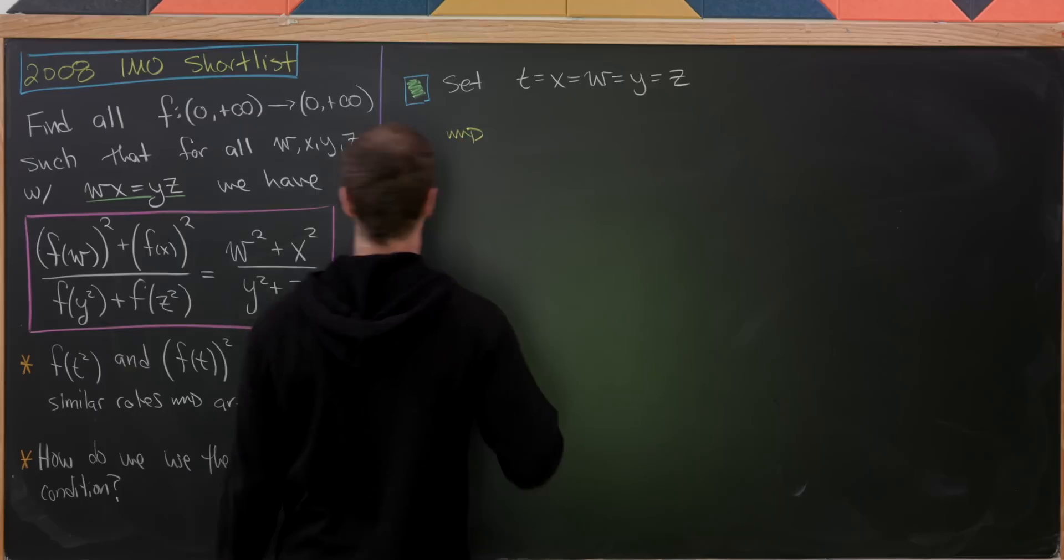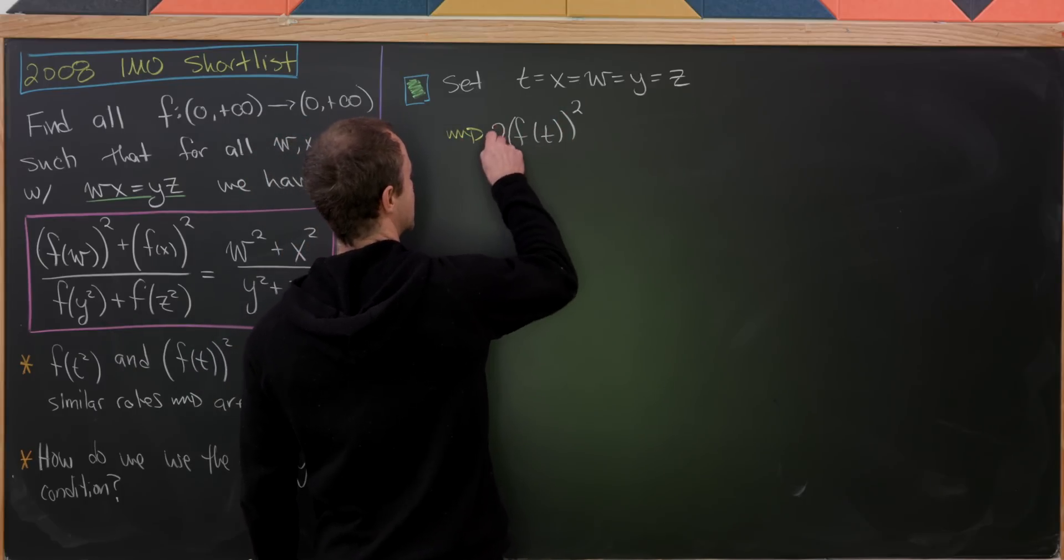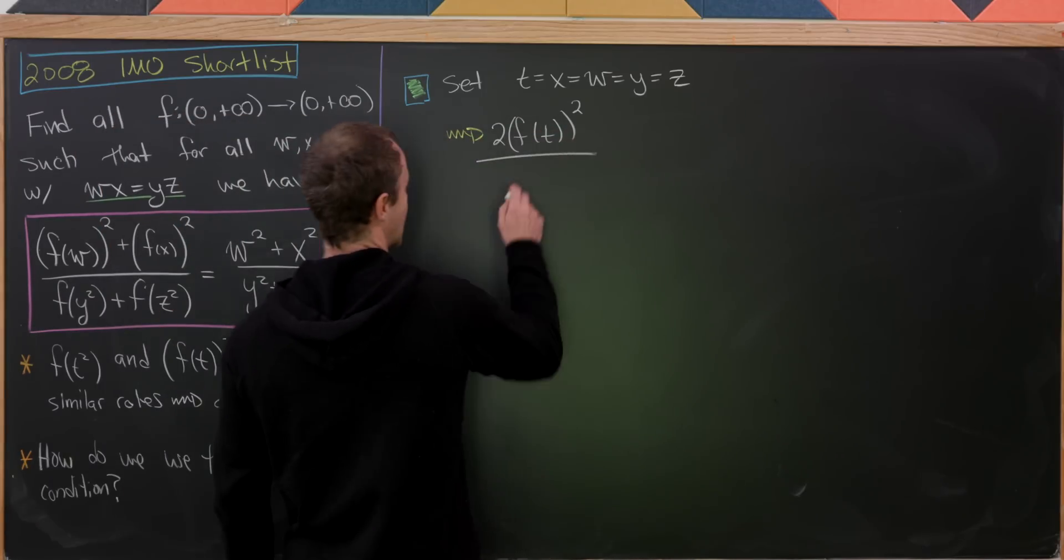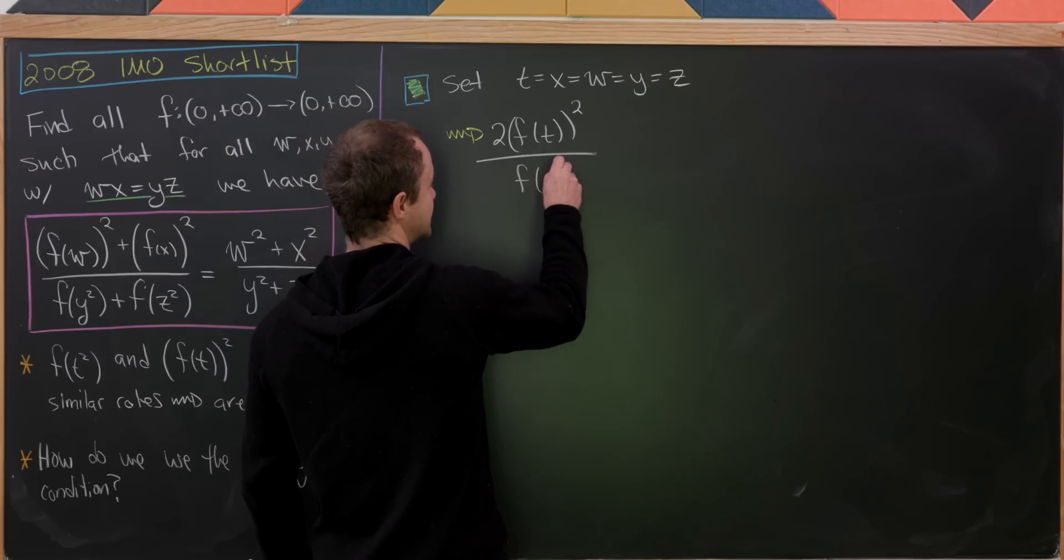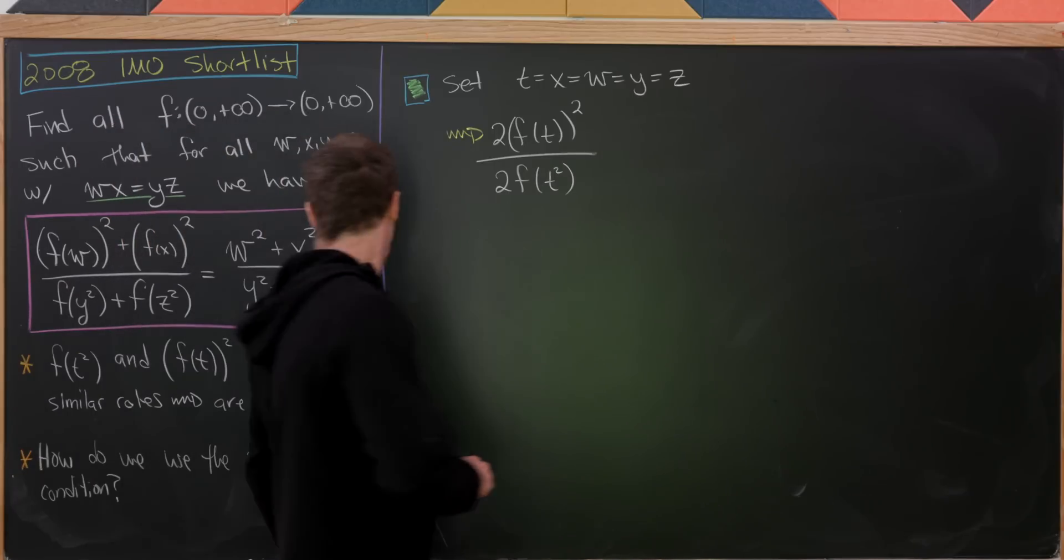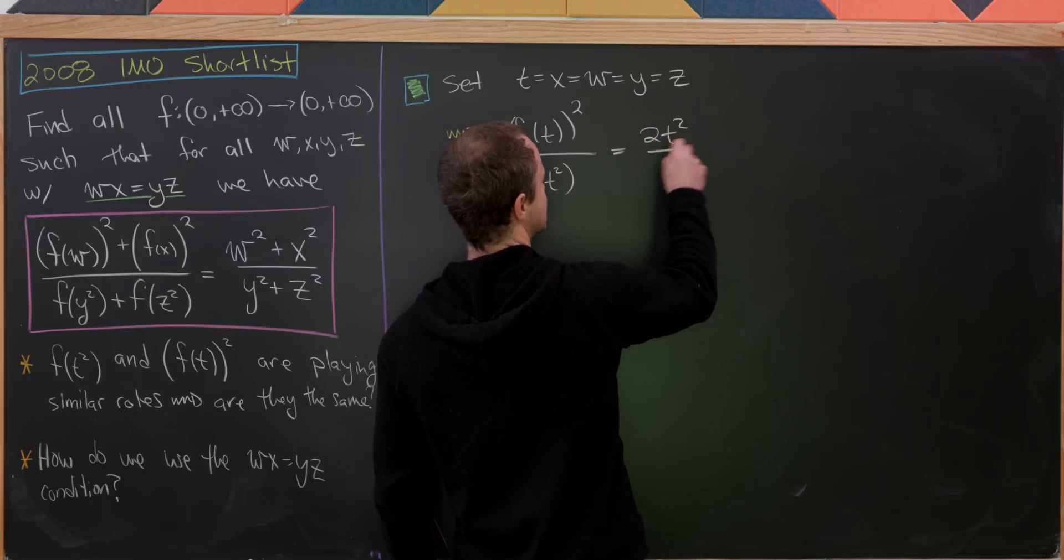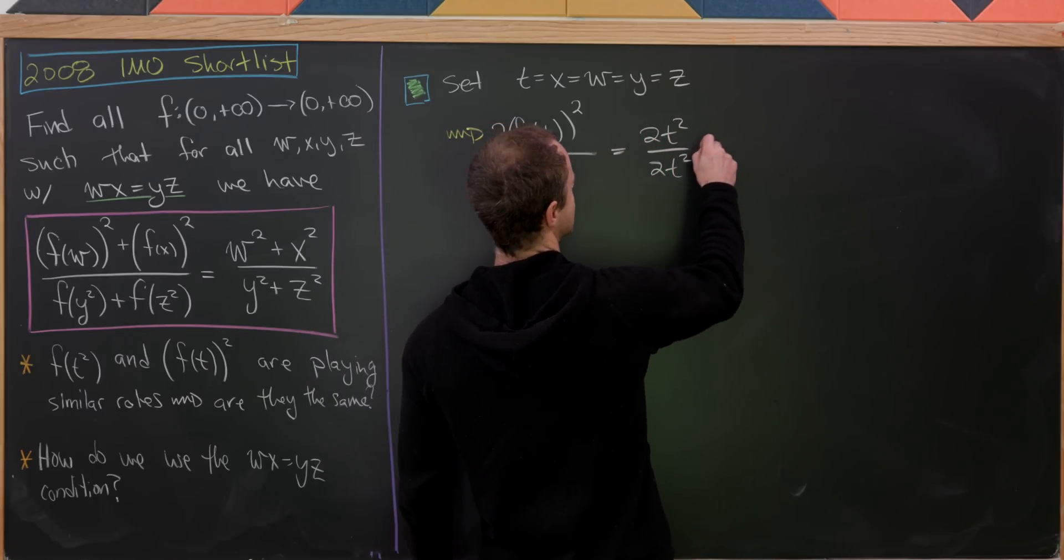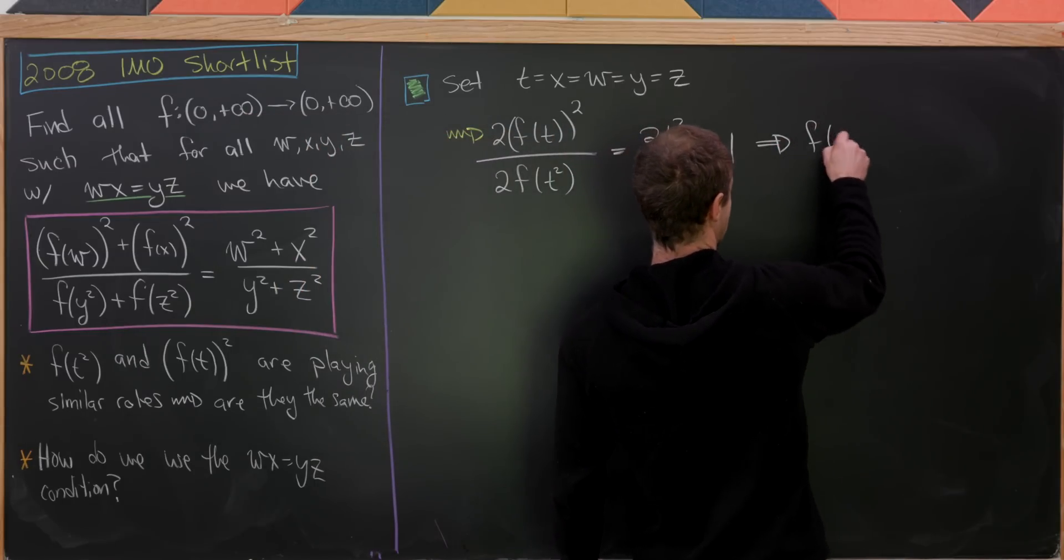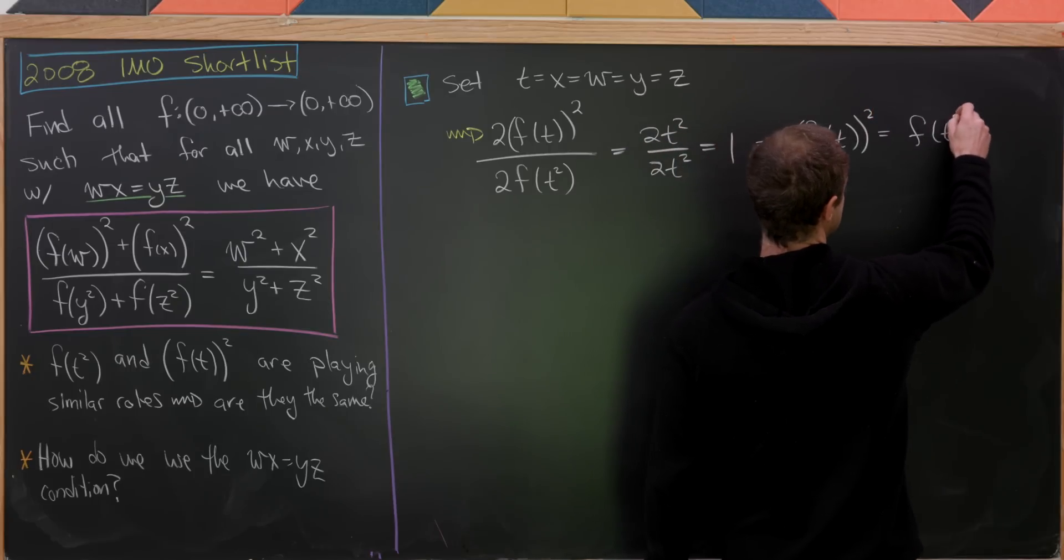So the numerator on the left-hand side simplifies to f(t)² plus itself, in other words, multiplied by 2. And then the denominator on the right-hand side simplifies to f(t²) added to itself, which is the same thing as multiplying by 2. The numerator and denominator on the right-hand side both turn into 2t². So we have 2t² over 2t², but that's clearly equal to 1.